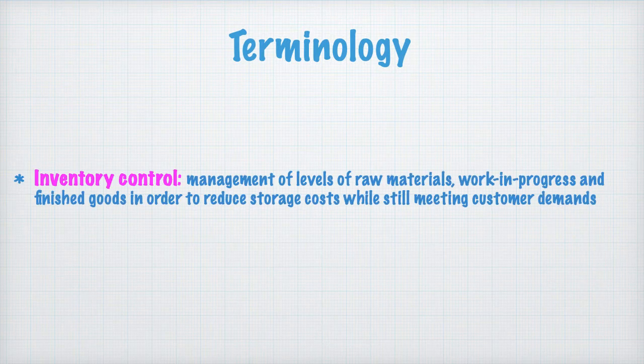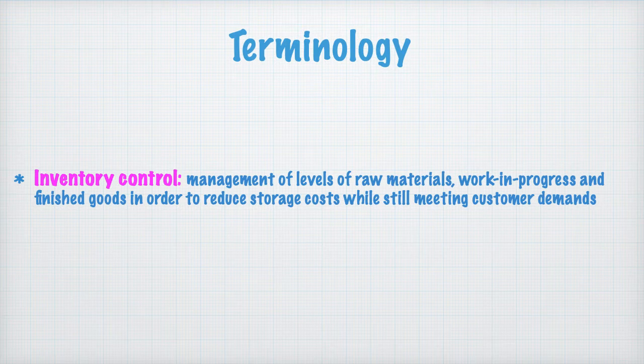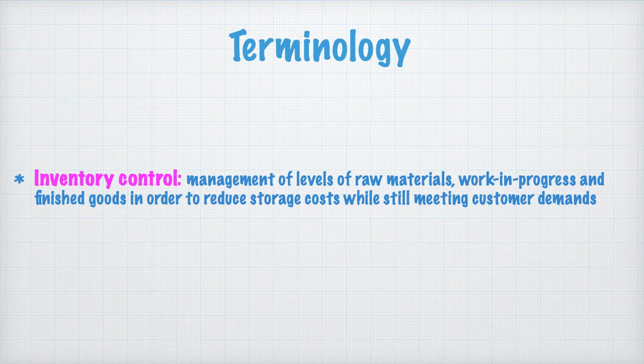So inventory control is about managing levels of raw materials, work in progress, and finished goods in order to reduce storage costs while still meeting customer demands. So it's not just about raw materials, it's about the three types of stock that a business will hold: raw materials, work in progress, and finished goods.